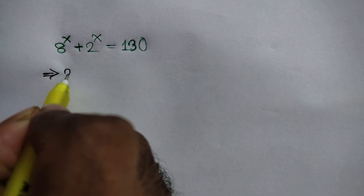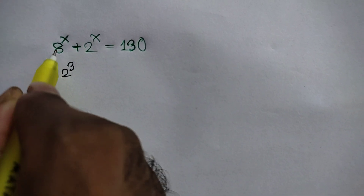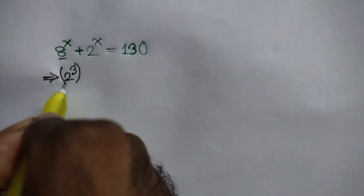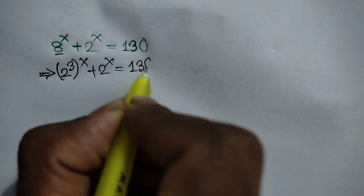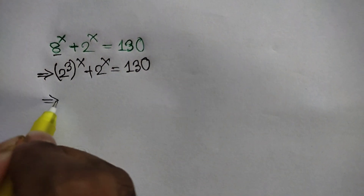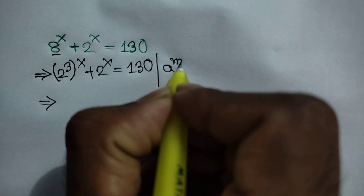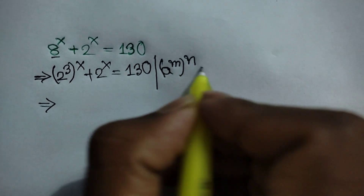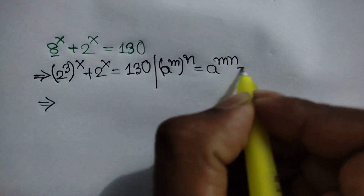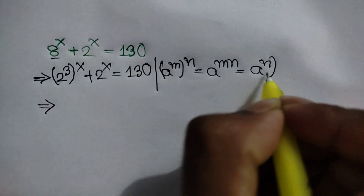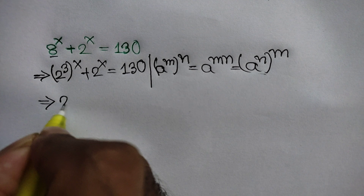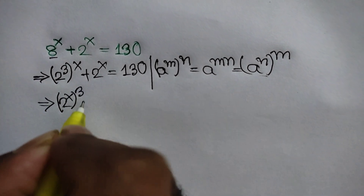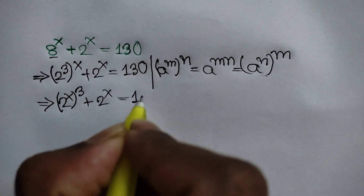We can write 8 as 2 to the power 3, because 2 to the power 3 is the same as 8. So we have 2 to the power 3, whole power x, plus 2 to the power x, is equal to 130. We apply the rule: a to the power m, whole power n, is equal to a to the power mn. Applying this rule, we can write 2 to the power x, whole power 3, plus 2 to the power x, is equal to 130.